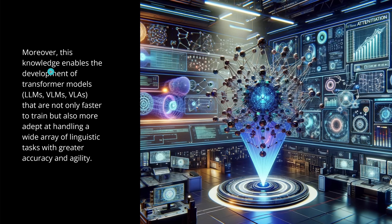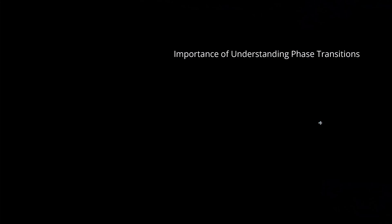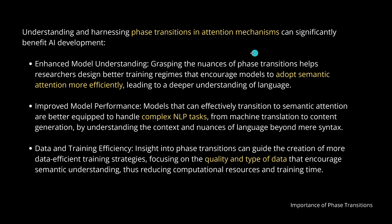This knowledge of a phase transition enables the development of transformer models that are not only faster to train, but also more adept at handling a wider array of complex linguistic tasks with greater accuracy and better agility. The importance of understanding this phase transition is really significant: we can enhance model understanding to adopt semantic attention more efficiently, improve performance on complex NLP tasks, and achieve better data and training efficiency.